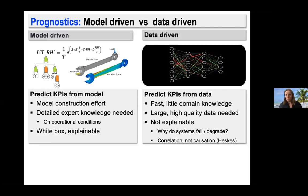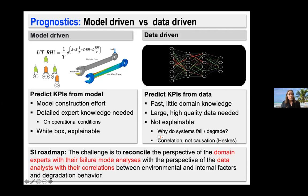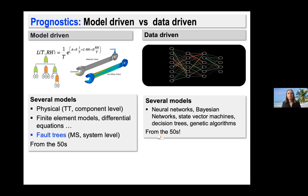A lot of research is being done on causation — for instance Tom Heskes, who is part of the project, has causal models for data analytics as his main topic. That is why smart industry roadmaps believe big advantages can be gained by combining both methods. The challenge is to reconcile the perspective of domain experts in failure mode analysis with data analysts looking at correlations between environmental, internal factors, and degradation behavior — which is exactly what we aim at in Primavera.